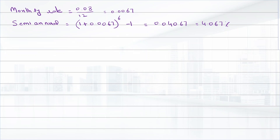We can now use this rate to find the present value of the annuity. The present value of annuity formula is: PV = Cash Flow × [1/i − 1 / (i × (1 + i)^n)].